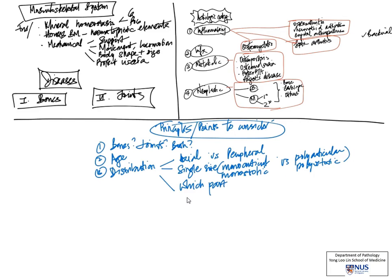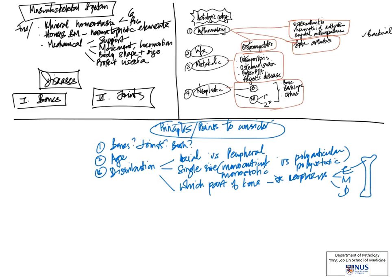Another distribution point is which specific part of the bone is involved, and this is especially important in bony neoplasms. Some primary bone tumors involve the epiphysis, some the metaphysis, and some the diaphysis. Knowing the location is extremely helpful — for example, giant cell tumors tend to involve the epiphysis, osteosarcoma likes the metaphysis, and Ewing sarcoma likes to involve the diaphysis.